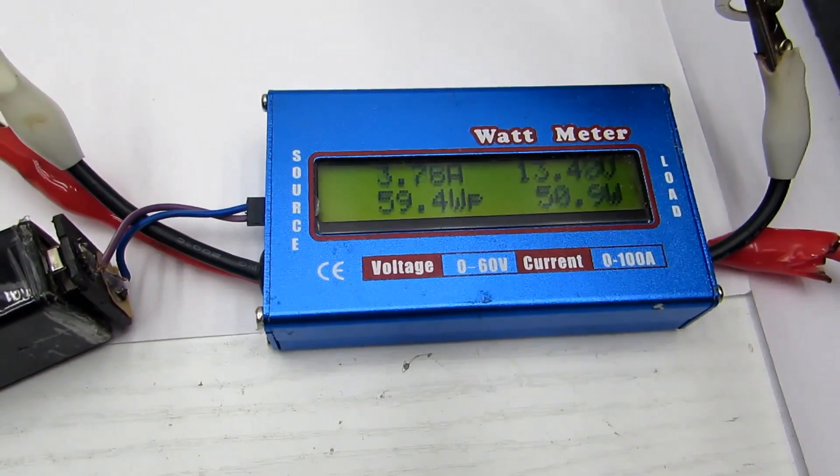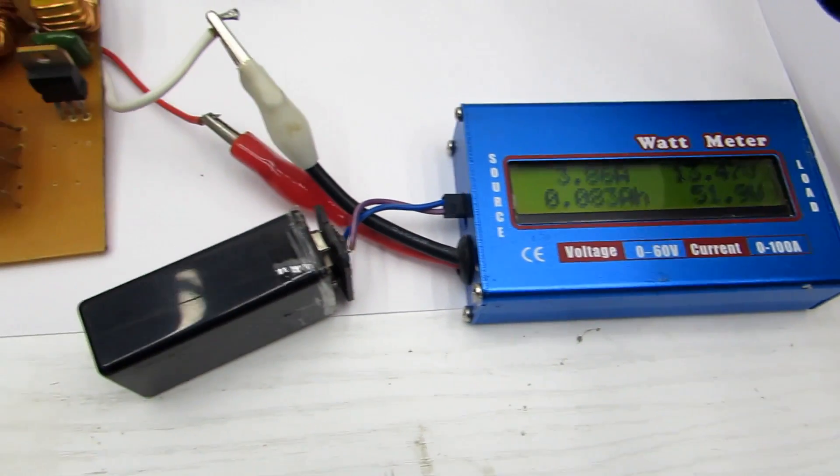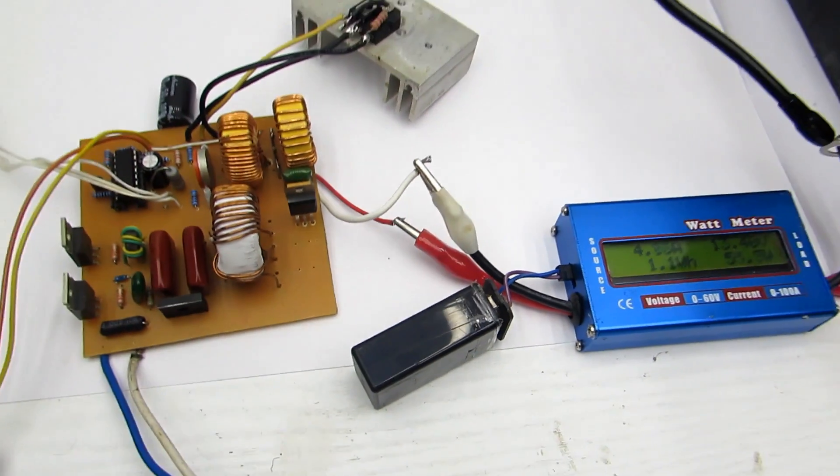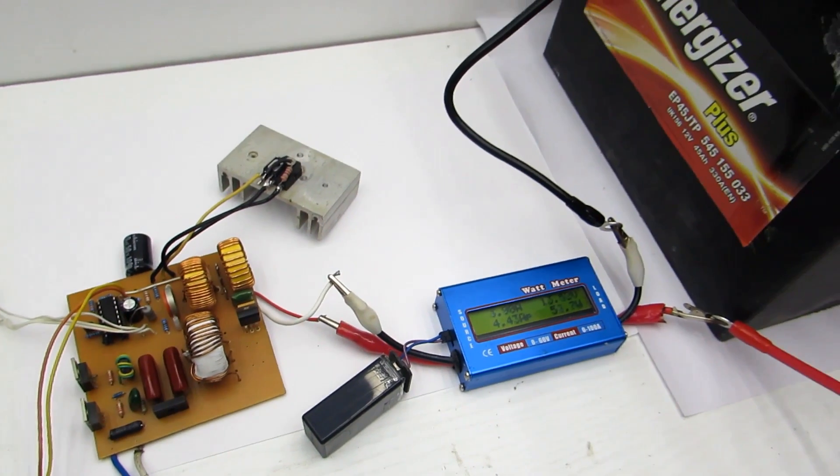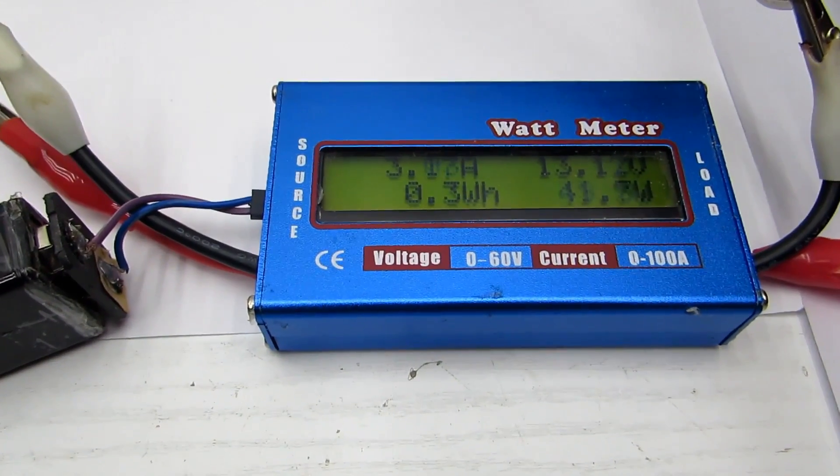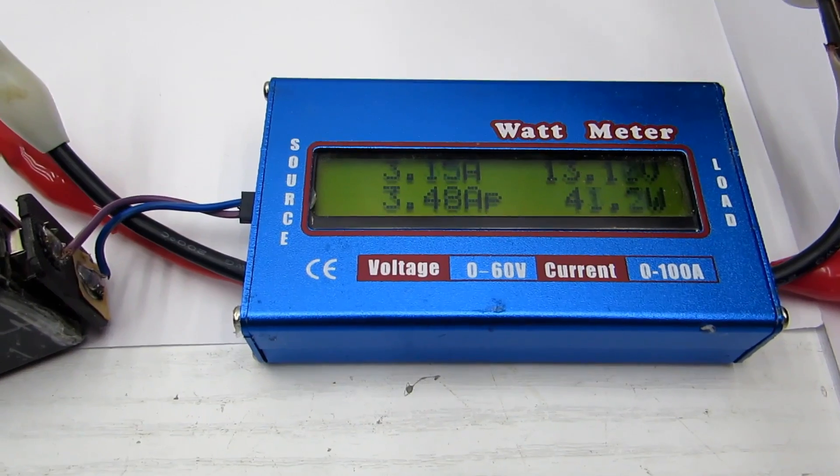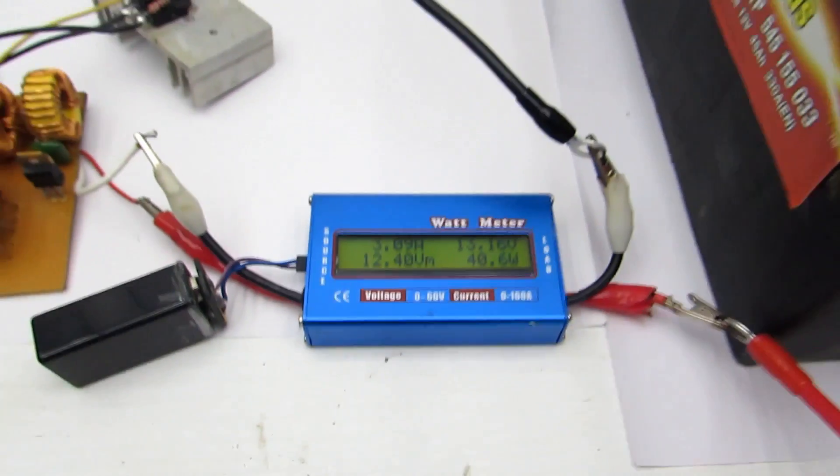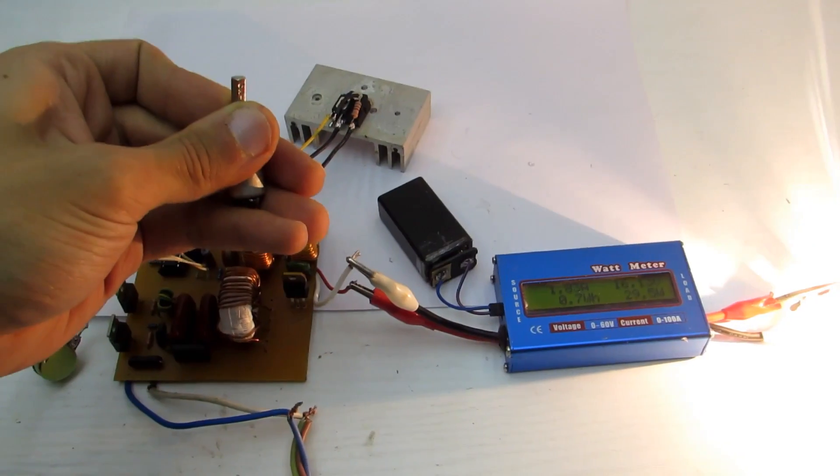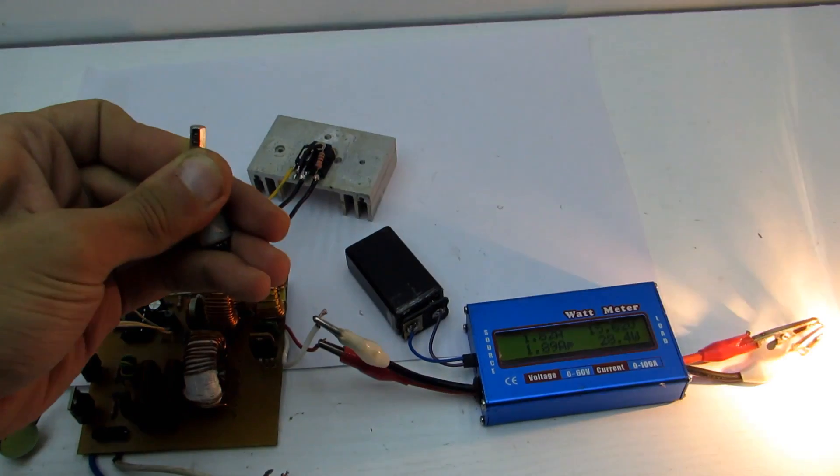The charging current in the circuit will drop and at the end of the process will be equal to zero. So, there is no danger of overheating the battery or charger. That process doesn't require human interference. It is also possible to use this stabilizer in the laboratory power supply.